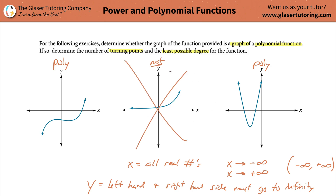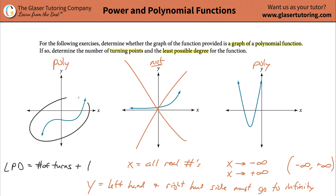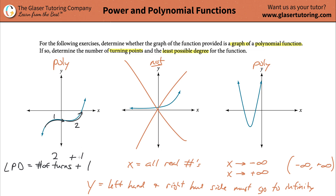We're not going to talk about turning points and least degree for the non-polynomial. The least possible degree of the polynomial - LPD - is going to be the number of turns plus one. When you look at this function, start on the left hand side and work your way to the right. Notice you make a turn here - that's one turn. Then you change direction again - that's two turns. Two turns plus one equals three. That's your least possible degree of the polynomial: three, meaning it would be some cubic, some third degree polynomial.